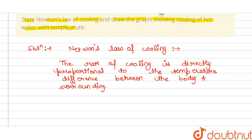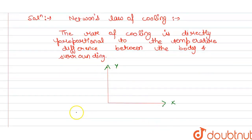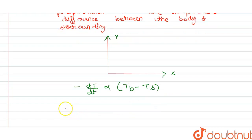So the graph for it - this is the y-axis here and this is the x-axis here. And we know that change in temperature with time is directly proportional to change in temperature of body minus temperature of surrounding, so the graph is...